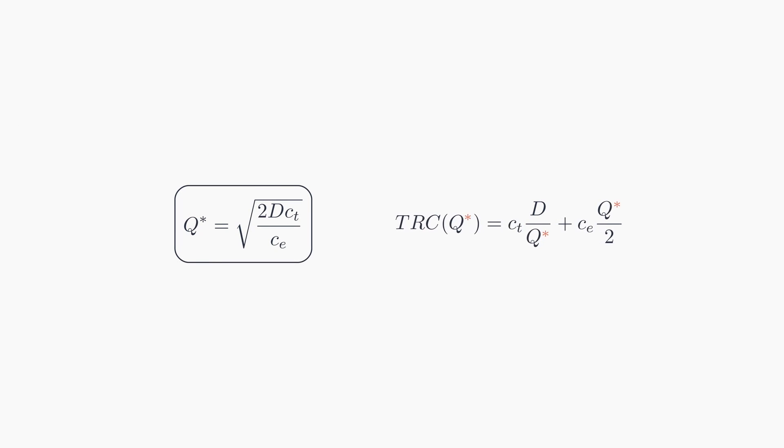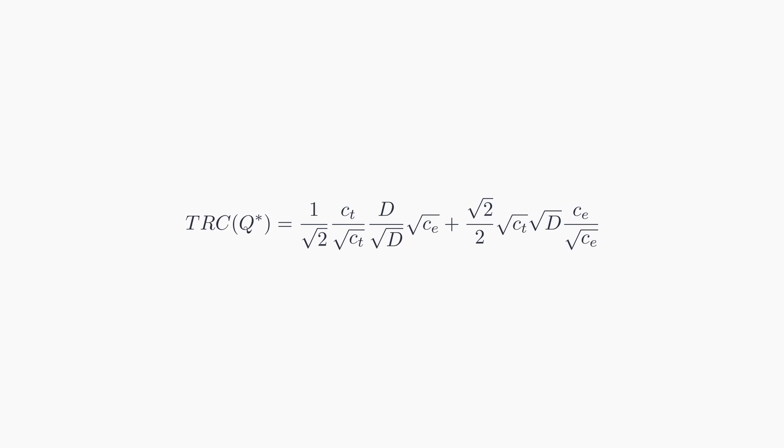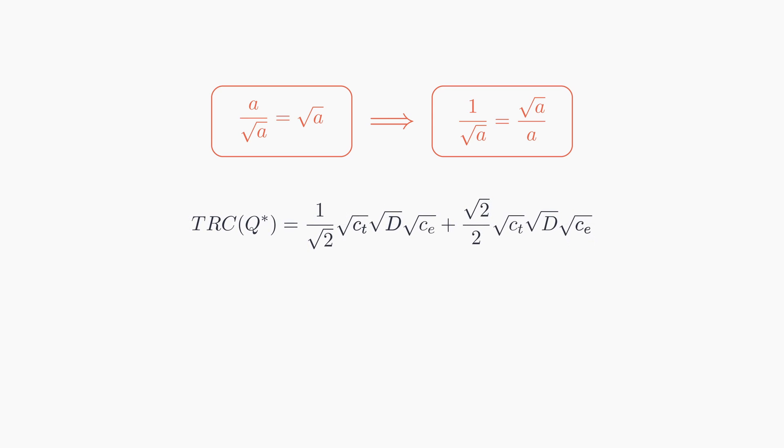Let's plug the optimal quantity into our total relevant cost equation and then streamline the expression. Now, focus on this property highlighted in orange. Notice how it also implies the property to the right. Both will be instrumental in our derivations.